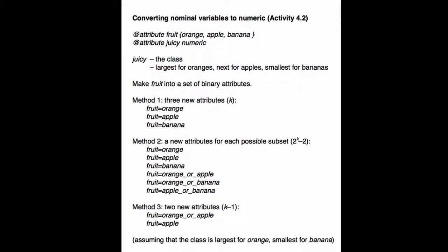And in this data set the class is juicy. It's a numeric class of juiciness. And I don't know about where you live but in New Zealand oranges are juicier than apples and apples are juicier than bananas. So I'm assuming that in this data set if you average the juiciness of all of the instances where the fruit attribute equals orange you get a larger value than if you do this for all the instances where the fruit attribute equals apple. And that's larger than for banana. So that sort of orders these values.